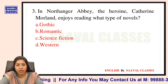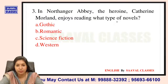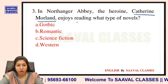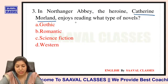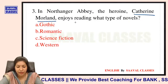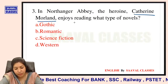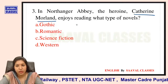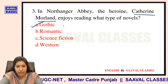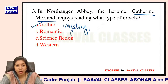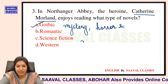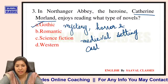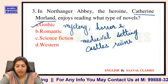Question number 3: In Northanger Abbey, the heroine Catherine Morland enjoys reading what types of novels — Gothic novels, Romantic, Science Fiction, ya Western? Catherine Gothic novels padna pasand karti thi — jo ki mystery aur horror se bhari hoti hain aur jinmein medieval settings hoti hain jaise castles, ruins, aur khandahar.